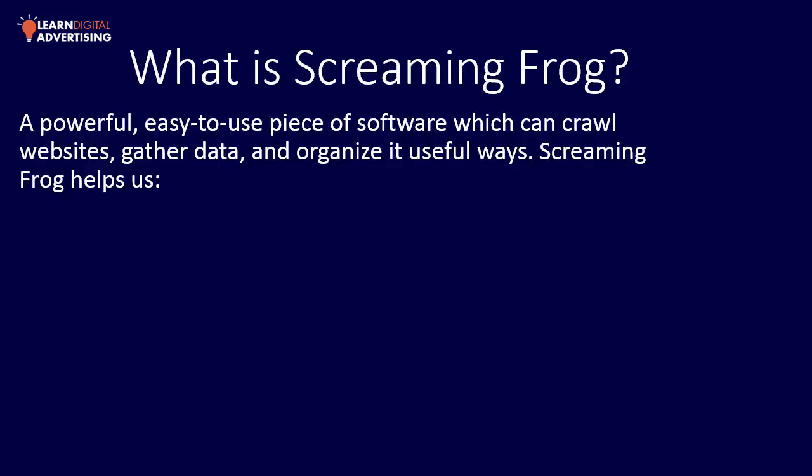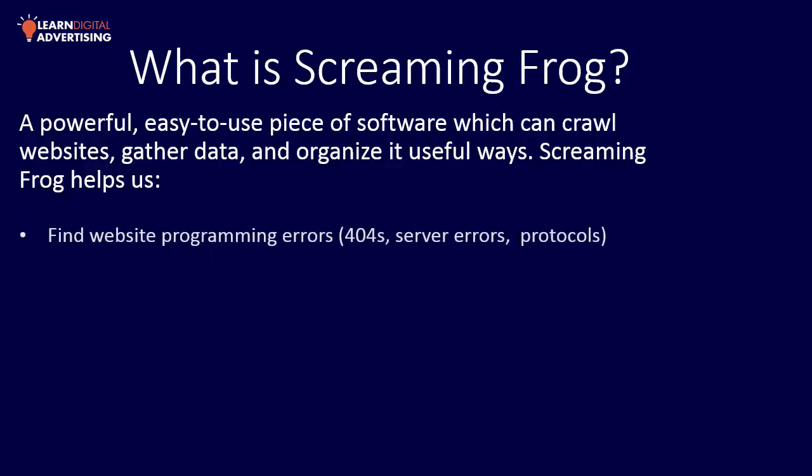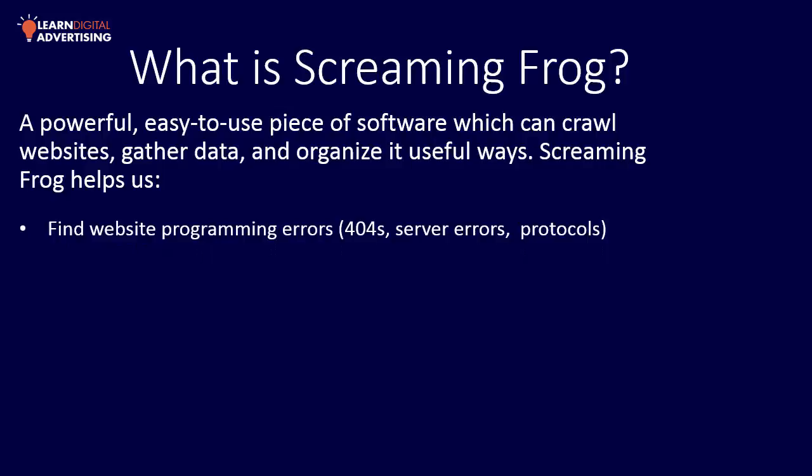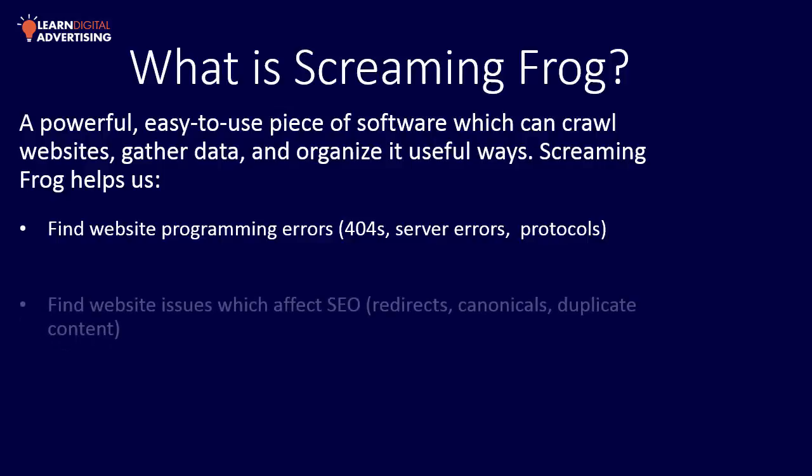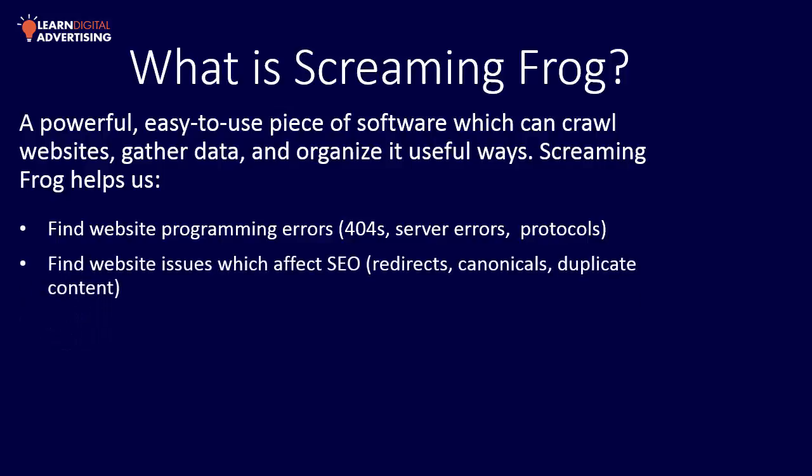Screaming Frog helps us do specific things like find website programming errors — these would be 404 errors, server errors. It also helps us look at different website protocols and find website issues which may affect SEO, so these would be things like internal redirects, and we can look at how canonicals are applied throughout the site.